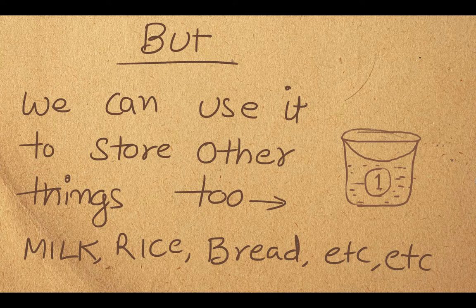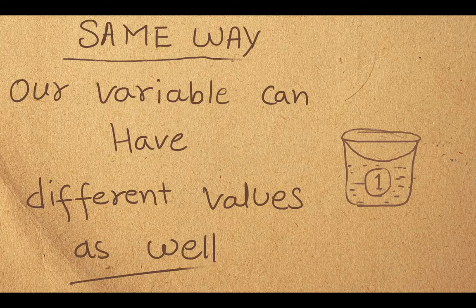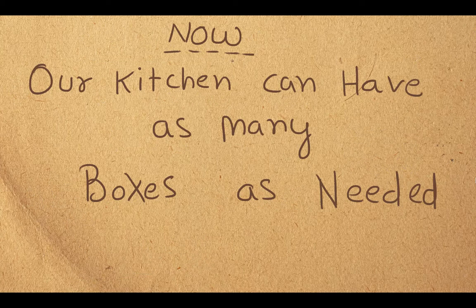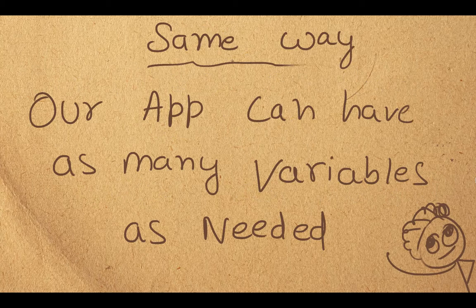This bucket can be used for other purposes as well — to store milk, honey, rice, paint, or maybe anything else. Same way, a variable can have different values. They can be modified, changed, increased, or decreased. Just like the age value was 20 and next time it can be 21 or 30. And your app can have as many variables as you need — there is no restriction.